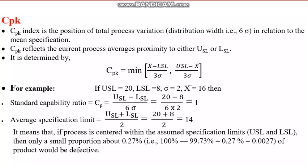Next is the CPK index. CPK is the position of total process variation — the distribution width six sigma — in relation to the mean specification. CP is called process potential, while CPK is called actual capability. CPK reflects the current process average's proximity to either the USL or the LSL.